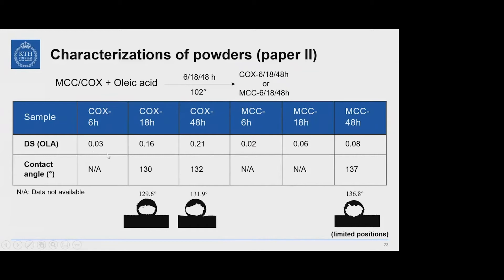The results show that the degree of substitution (DS) is generally low, but with increasing reaction time, both COX and MCC show increasing DS, with COX increasing faster than MCC. Without a catalyst, the reaction between MCC and oleic acid is very limited. After 18 or 48 hours, reacted COX showed a detectable contact angle of around 130°. After 48 hours, MCC showed a contact angle of around 137°, but only at very limited surface positions — most areas still absorbed water droplets immediately, so the surface modification was not uniform.